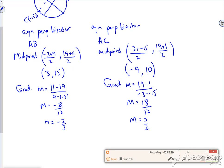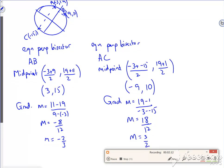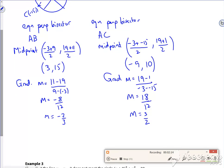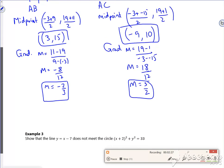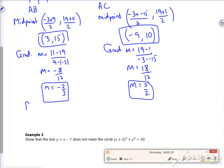Right then, so if you look, for AC, or AB sorry, I've worked out the midpoint and I've worked out the gradient. And for AC, I've worked out the midpoint and I've worked out the gradient. Now I want, because it's a perpendicular gradient, I want the perpendicular gradient, so if the M is 3 over 2, then the M is minus 2 thirds.